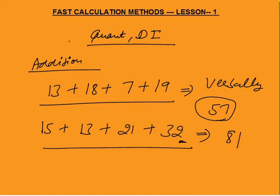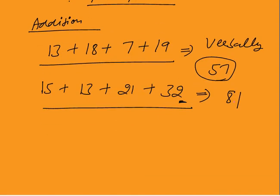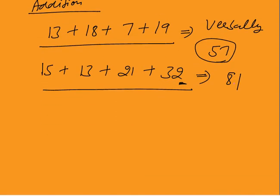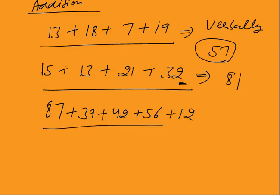You should not write — you have to add two-digit numbers verbally. For example, if you need to add 87 plus 39 plus 42 plus 56 plus 12, four or five two-digit numbers, you must be able to add verbally.